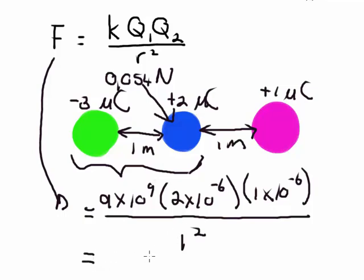So when we calculate this value, it gives us 0.018 Newton. Because both of them are positive, they will repel each other, which means that this blue point charge over here is going to experience 0.018 Newton also to the left.